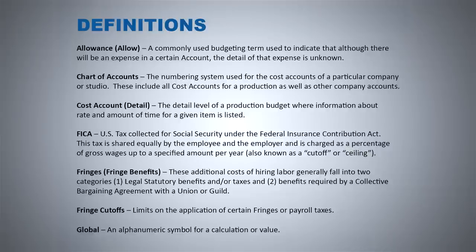One of the things we want to do right at the outset is to define some key terms I'm going to be using throughout this training. The first one is allowance, or allow. This is a commonly used budgeting term used to indicate that although there will be an expense in a certain account, the detail of that expense is unknown. You're saying you need to allow $500 for this item — you don't know that's what it'll cost, but you'll allow up to that amount. In the case of craft services, you'd keep it as an allow because you don't know the cost until someone actually goes to the store.